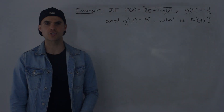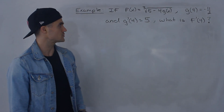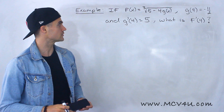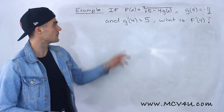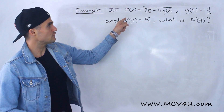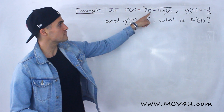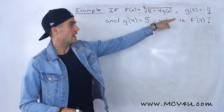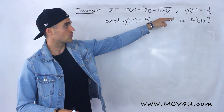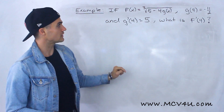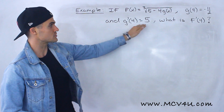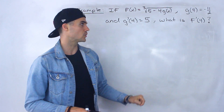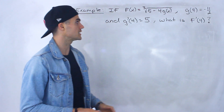Welcome back. Patrick here, moving on to another example. This one's going to be kind of complex, a little unique. So if f of x is the third root of 5 minus 4 times g of x, and g of 4 is equal to negative 11 over 2 and g prime of 4 is equal to 5, what's f prime of 4 going to be?